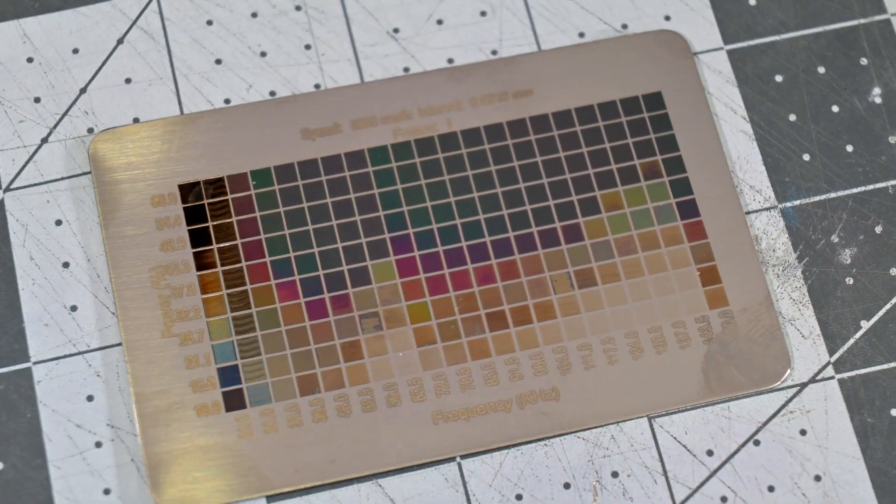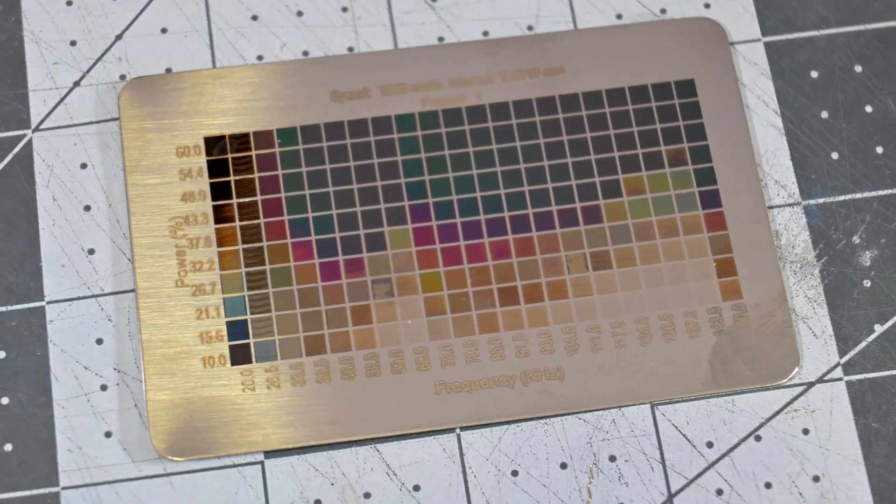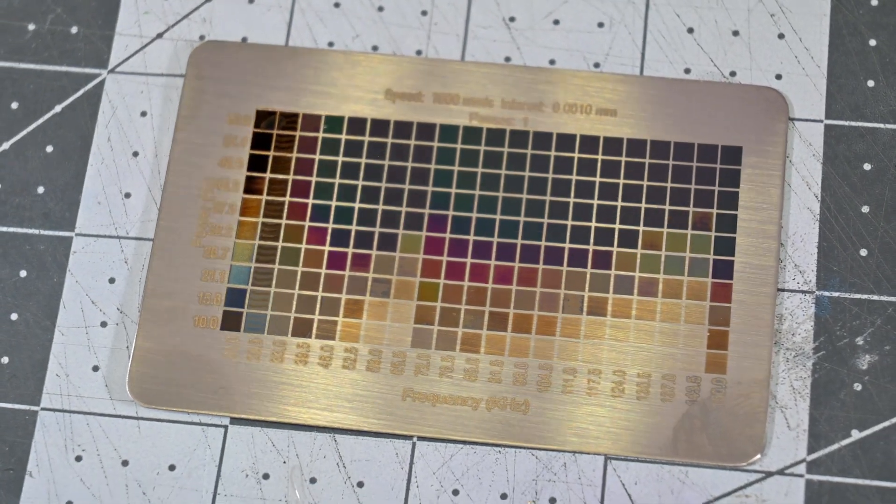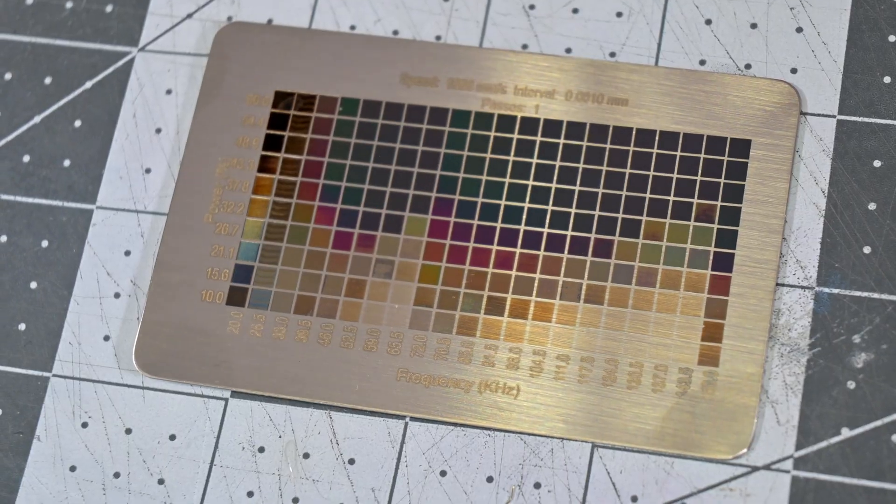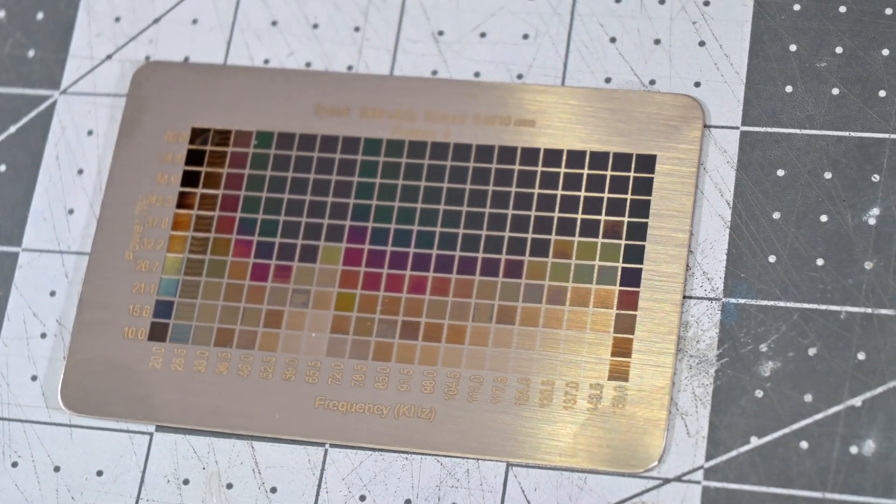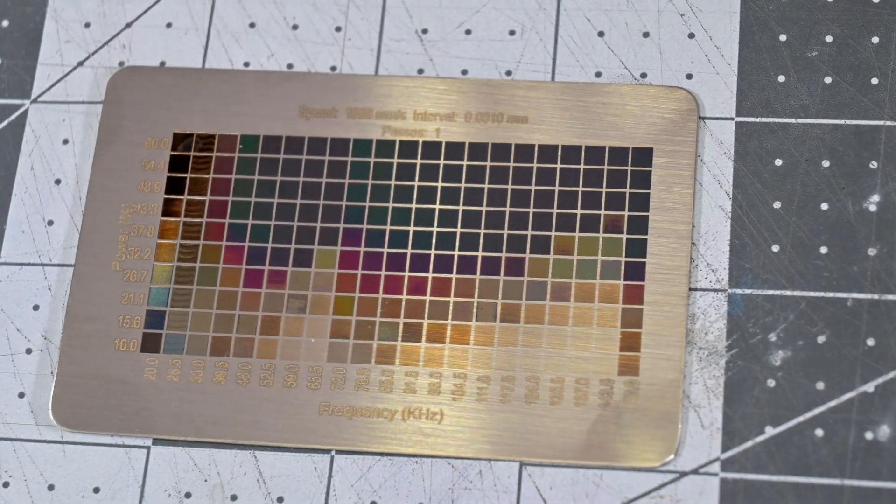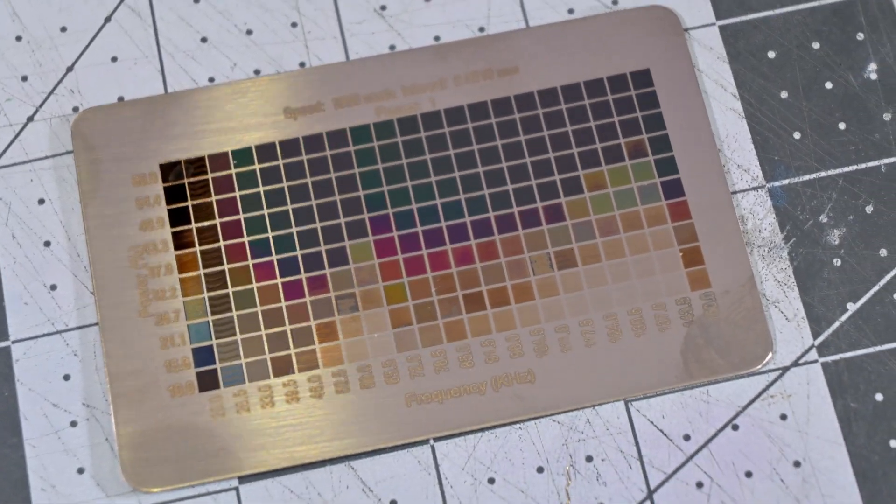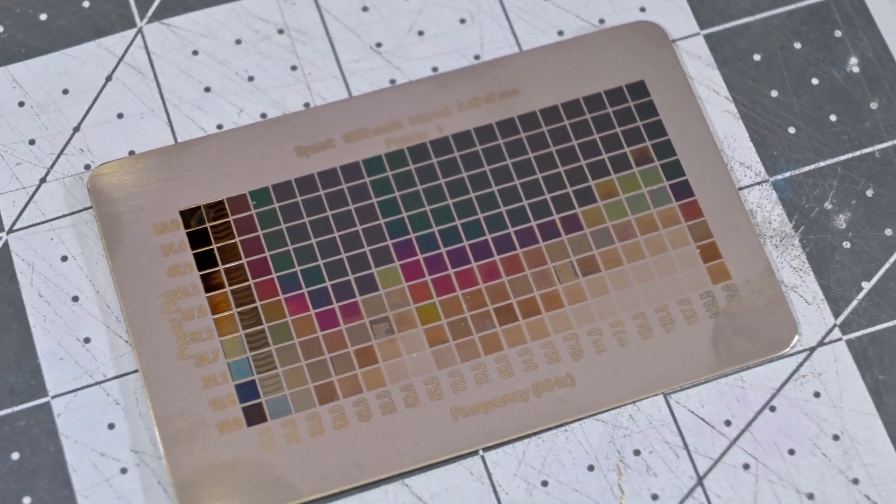By varying the power, line interval, and frequency, I was able to achieve some brilliant colors on stainless steel. The F1 Pro might have the best color results that I've seen from a non-Mopa fiber laser. I was able to create greens, magentas, blues, reds, purple, and way more colors. Normally, I've only seen this variety on Mopa lasers. The F1 Pro really impressed me with these color results on stainless steel.